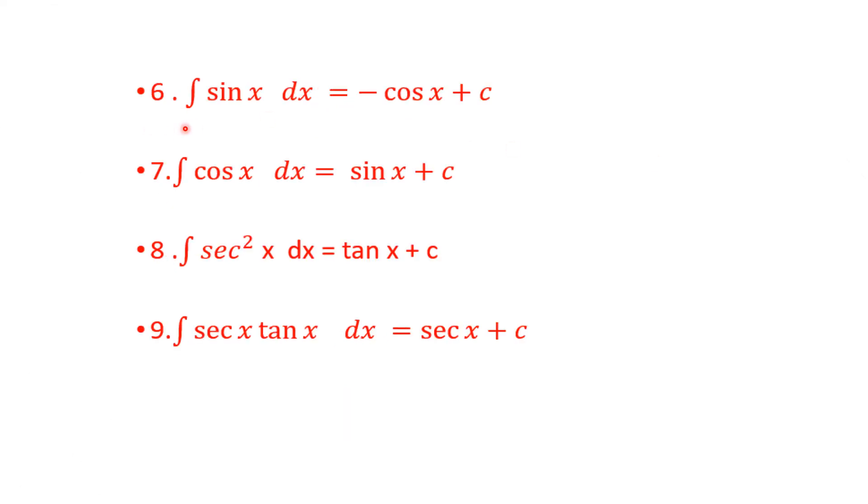Sixth formula is integration of sin x is equal to minus cos x plus c. Integration of cos x is equal to sin x plus c. Now thing to be remembered is integration of sin x will get a minus sign, but the integration of cos x will be sin x with a positive sign.